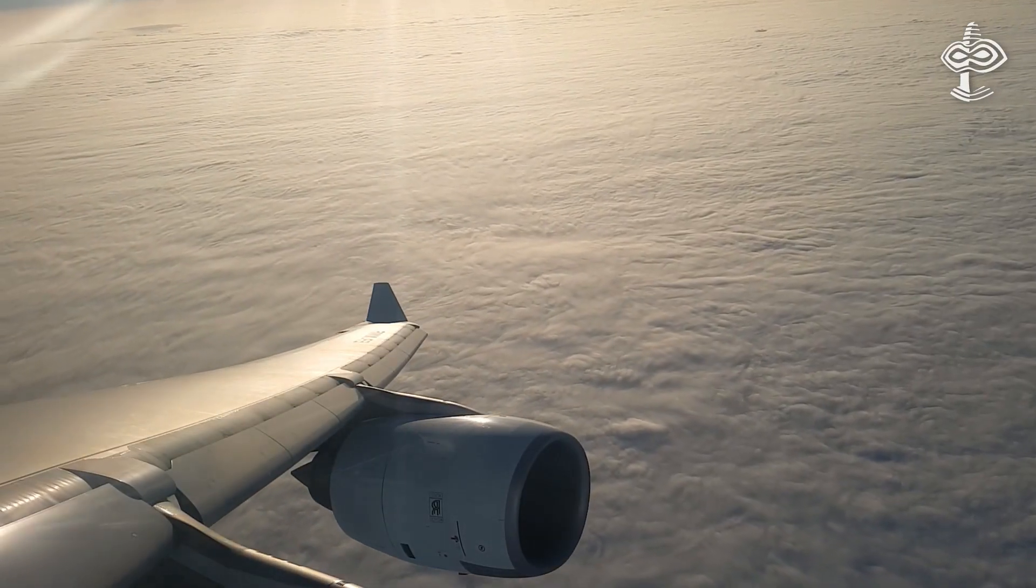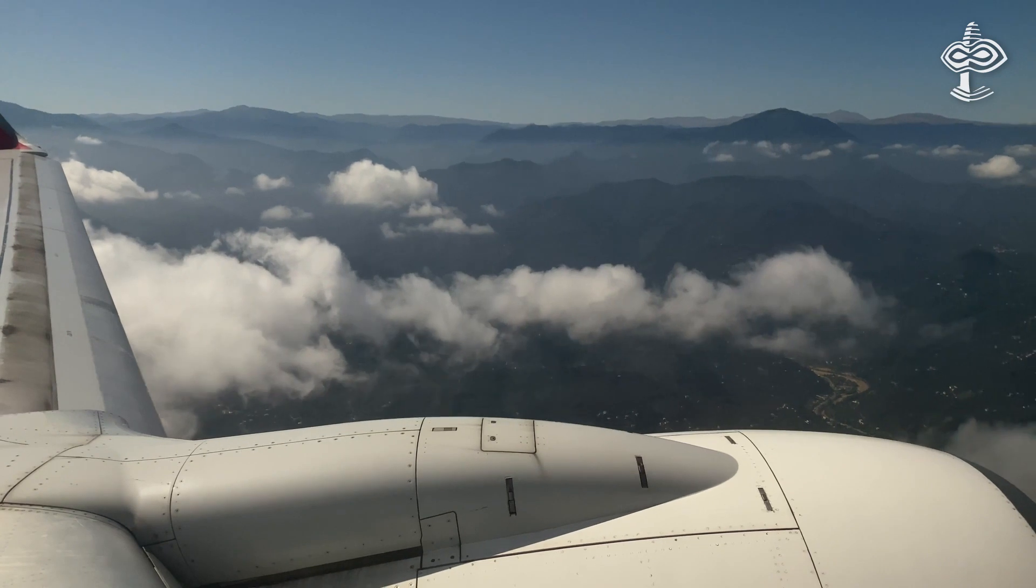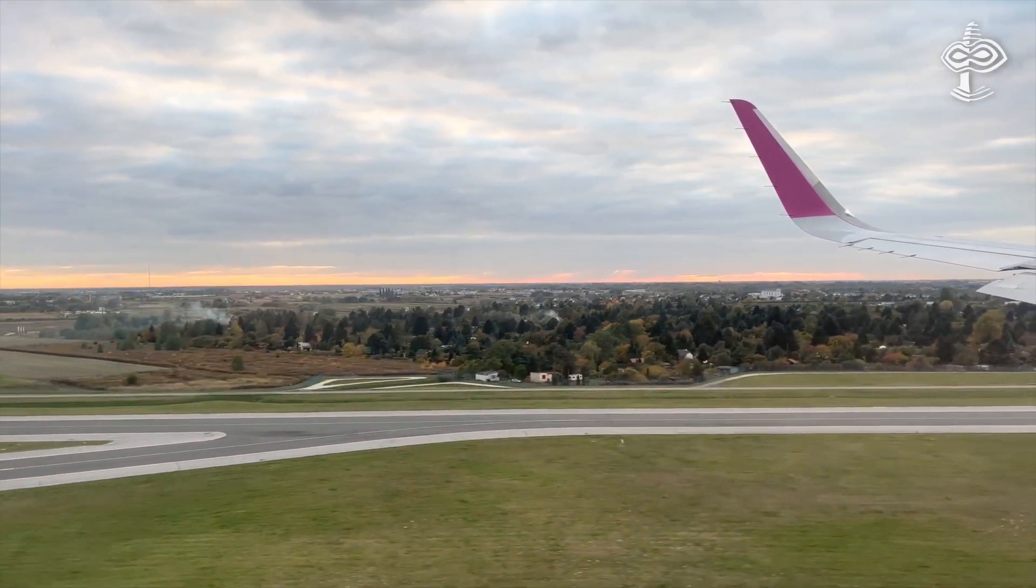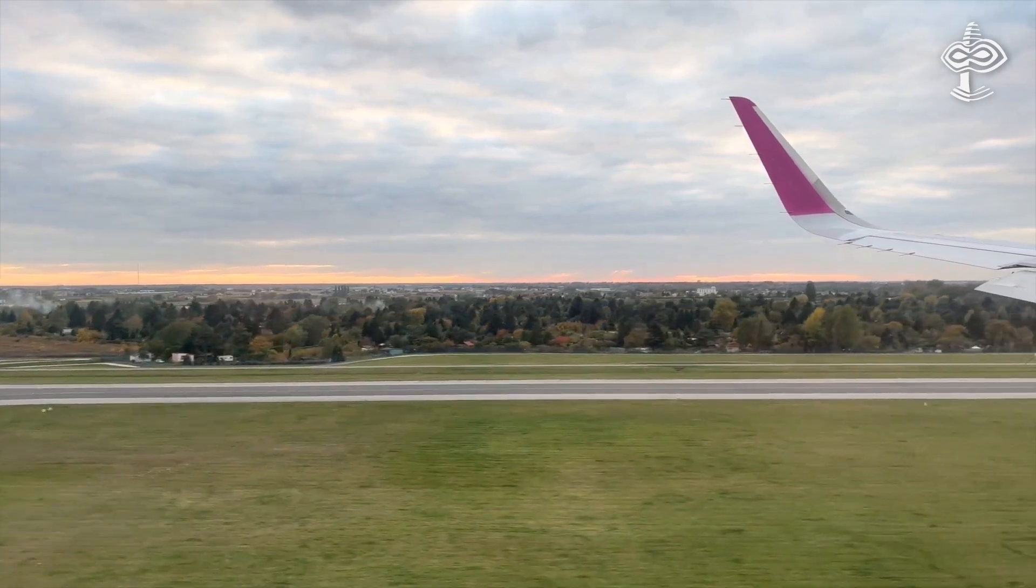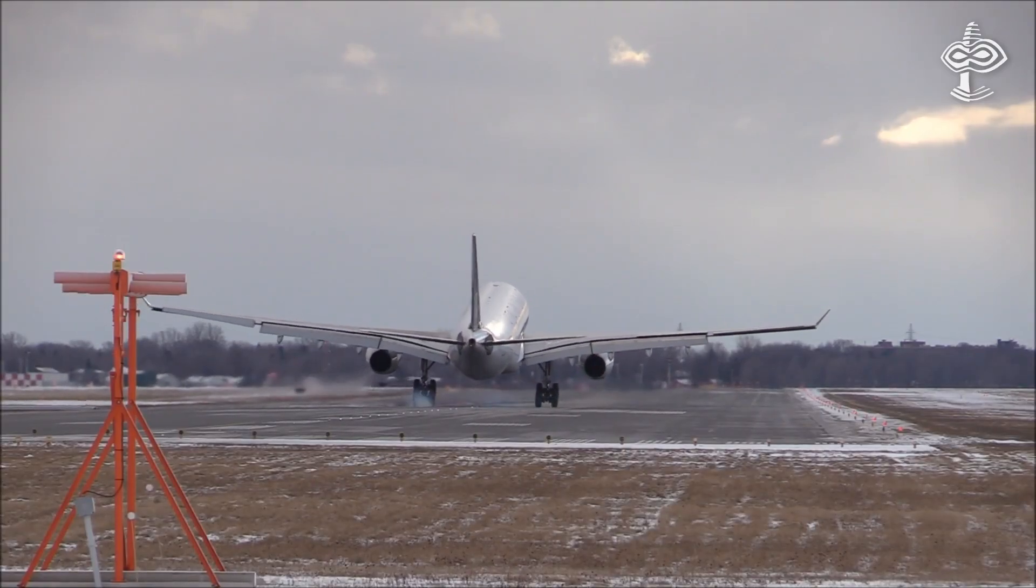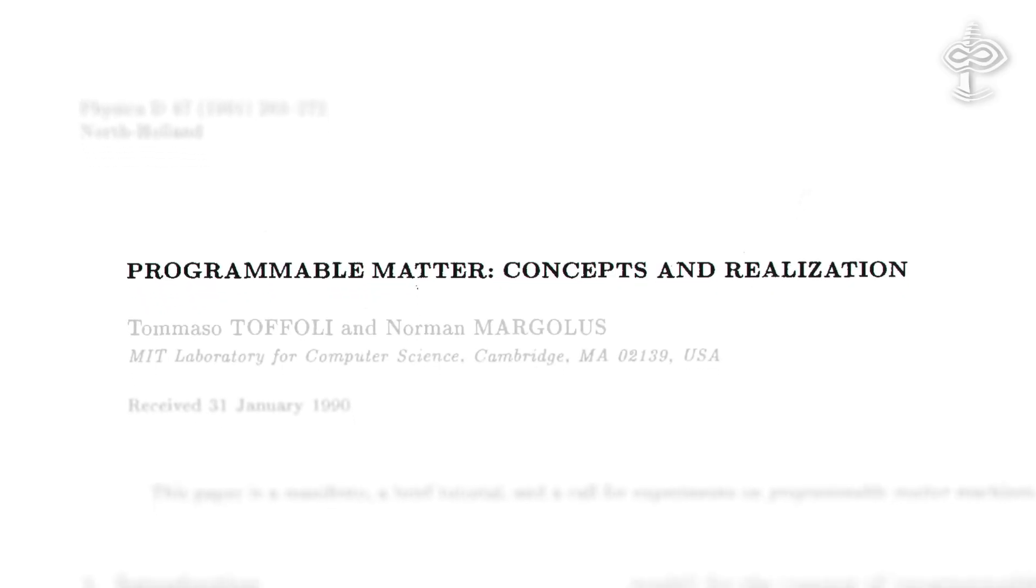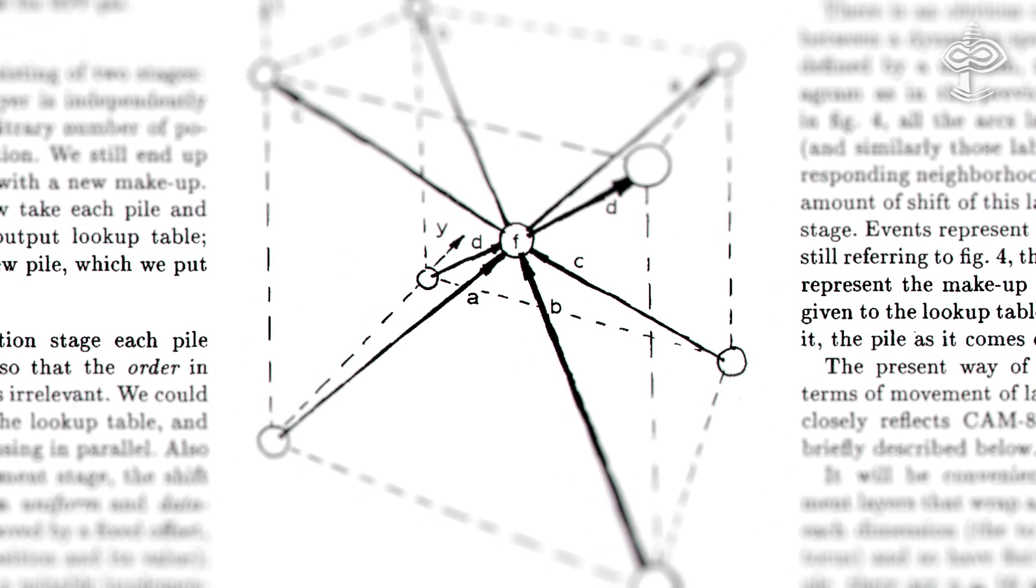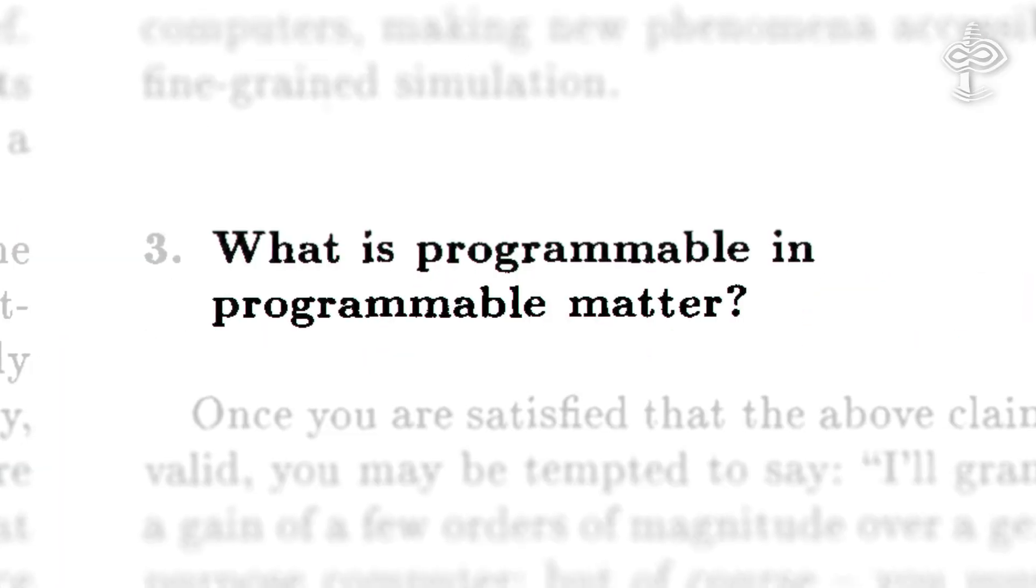Now, theoretically, such UAP shape-shifting observation can be explained if it is some kind of a dynamic material or programmable soft matter. If you think this is far out, think again. Programmable matter is a legit field in modern science investigating cutting-edge technologies for military and civil industries applications.